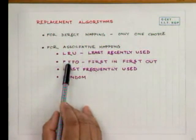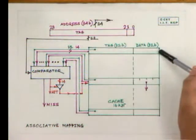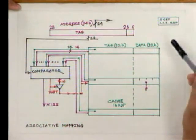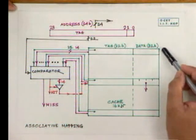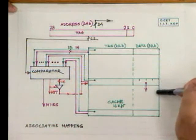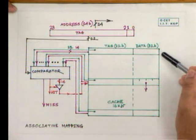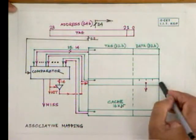Another replacement algorithm is FIFO — first in, first out. In this case, the line which came into the cache first is the candidate for replacement. Using a timer for comparison would be too time-consuming, so hardware-wise a circular list can be kept among the cache lines with a header and a tail as a FIFO list. The line at the header — which came in first among all the lines — can be removed.